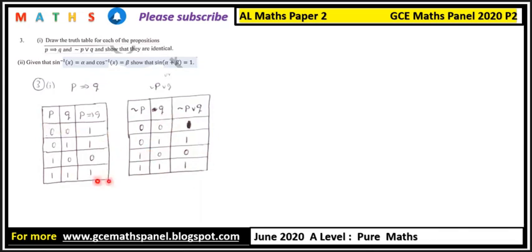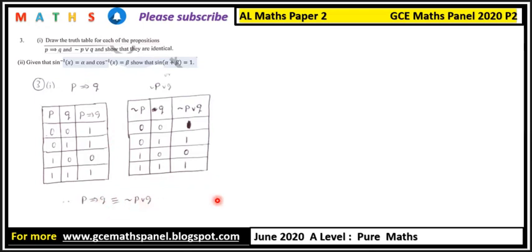When you look at these two tables, you can see they are actually identical. So whenever you have p implies q, you can replace it using negation of p or q, and vice versa. We therefore conclude that p implies q is identical to negation of p or q.